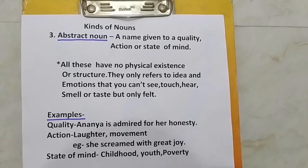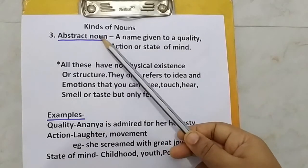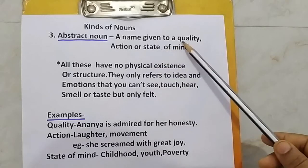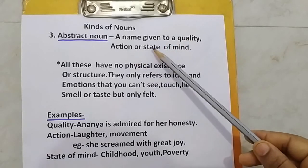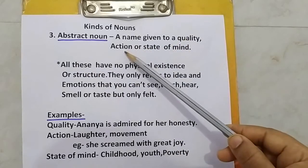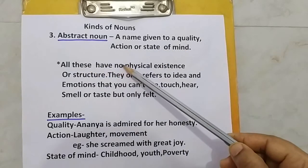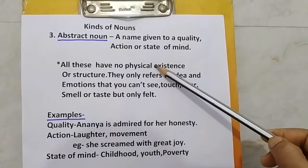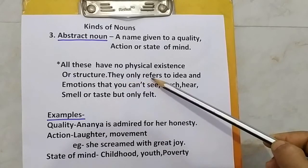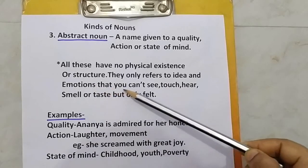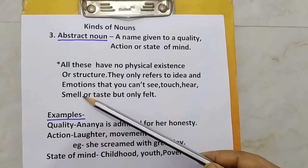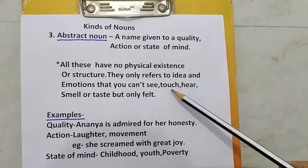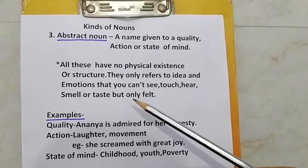Let us learn the definition. What is abstract noun? Abstract noun is a name given to a quality, action, or state of mind. Quality, action, and state of mind have no physical existence or structure. They only refer to ideas and emotions that you can't see, touch, hear, smell, or taste — but can only be felt.